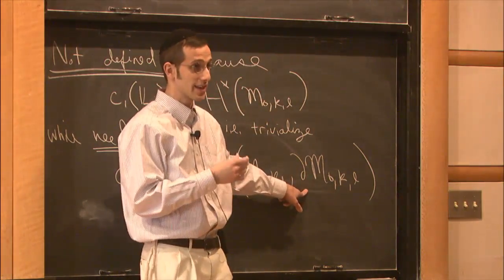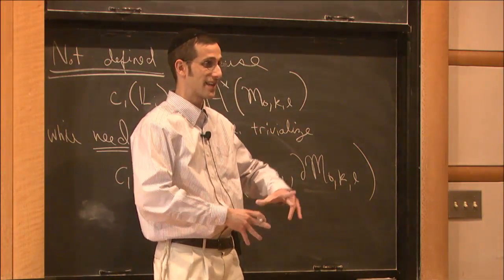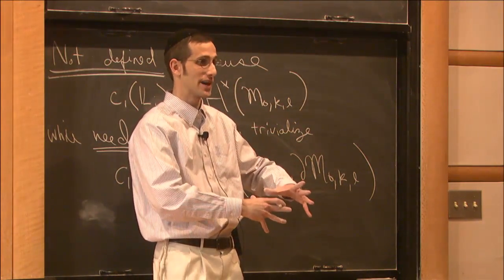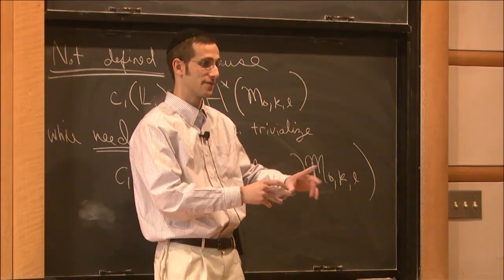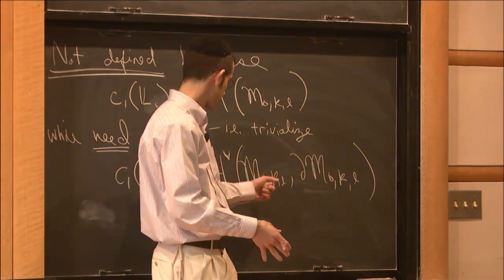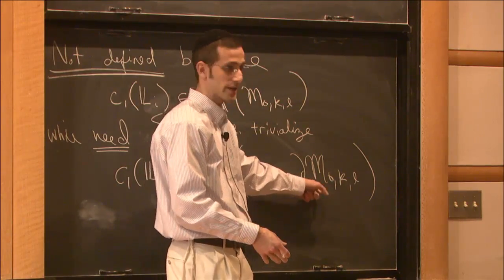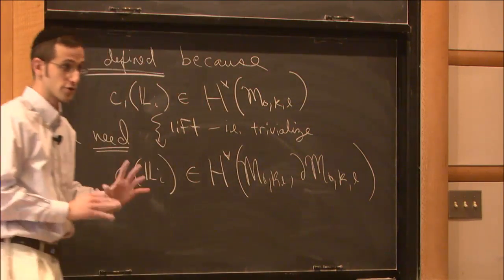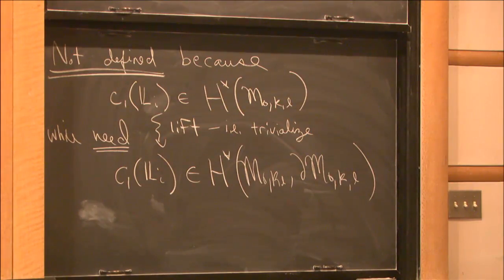This is actually a boundary in the topological sense — a codimension 1 boundary — not like a codimension 2 boundary as in the case of complex curves.